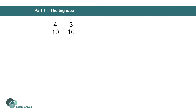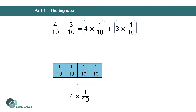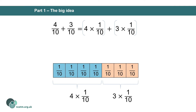Carrying this idea forward, if we look at this example, we could say that we are adding four lots of one tenth and three lots of one tenth. So we're adding four lots and three lots of the same unitary value, which in this case is one tenth. We have four lots of one tenth plus three lots of one tenth, giving us seven lots of one tenth in total, or seven tenths.